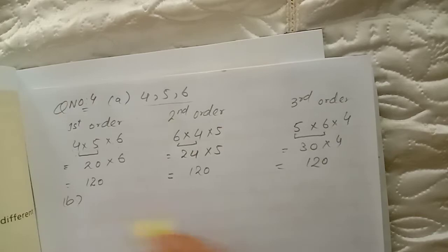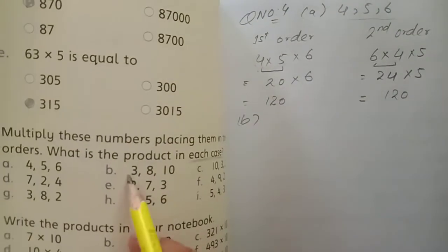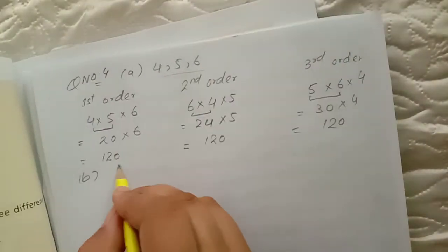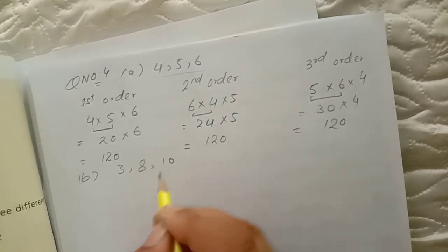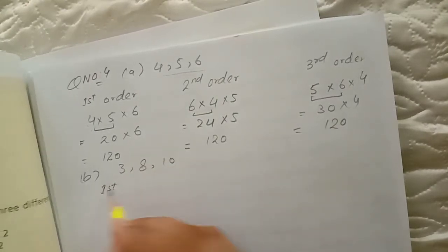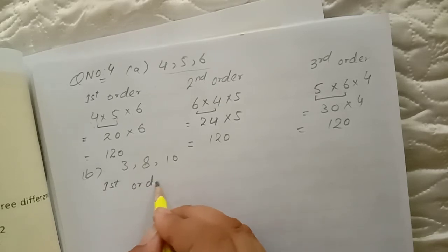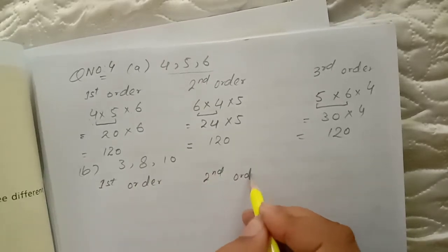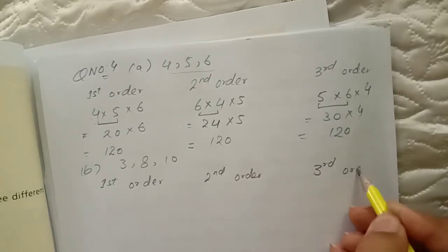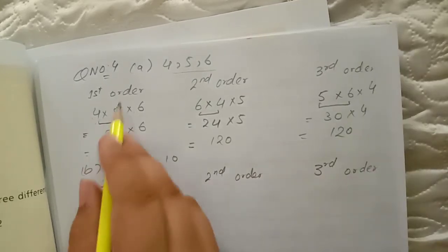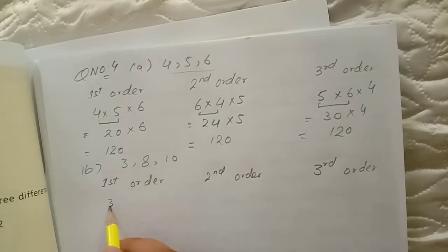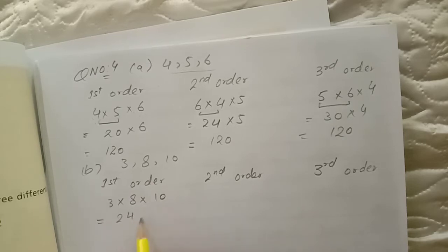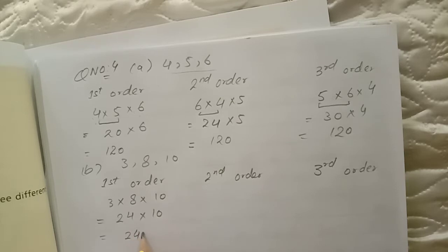Now part B — the numbers are 3, 8, and 10. Do it the same way. First order: write as given, 3 × 8 × 10. Multiply 3 × 8 = 24, then 24 × 10 = 240. So the answer for the first order is 240.